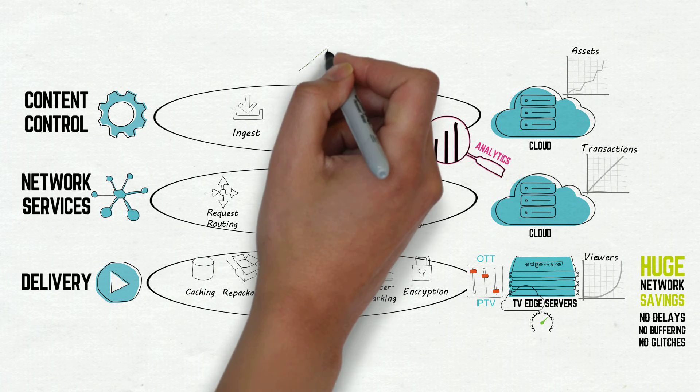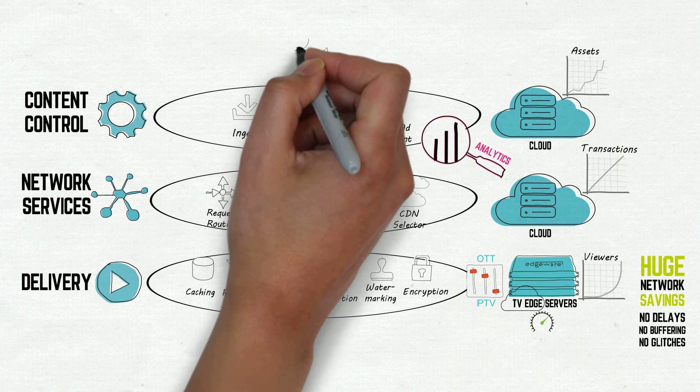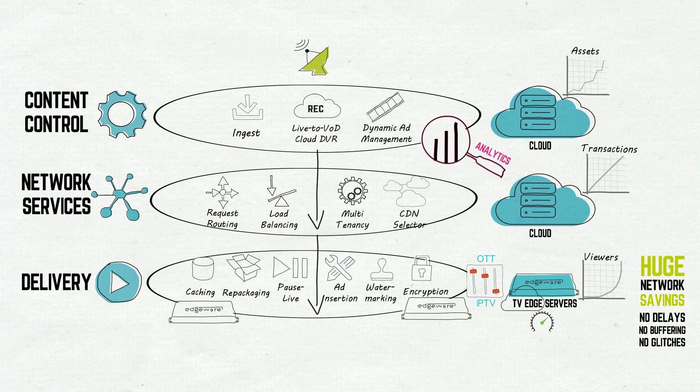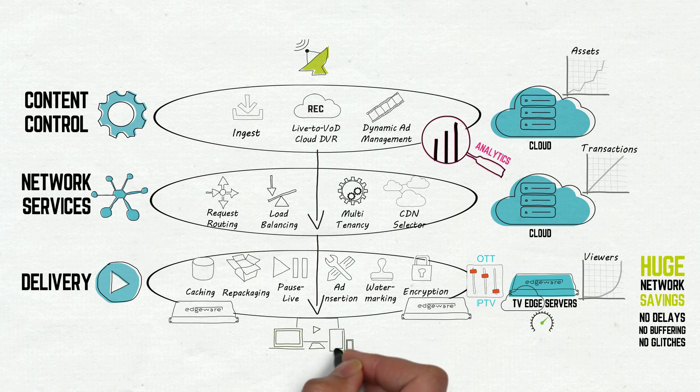And the good news is you don't have to start from scratch. You can build a TV CDN one layer at a time, either embedding the delivery layer into your own network or distributing it at peering points closer to your viewers.